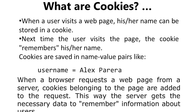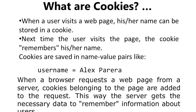When a web server has sent a web page to the browser, the connection is shut down and the server forgets everything about the user — which site was requested, which information was requested. Cookies were deliberately invented to solve this problem: how to remember information about the user so that information about that particular user is retained with the server. When a user visits a web page, his or her name can be stored in a cookie. Next time the user visits the page, the cookie remembers his or her name. Cookies are saved in name-value pairs, such as username = Alex Pereira.